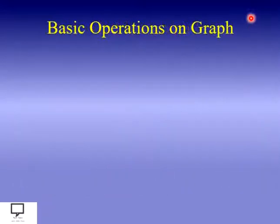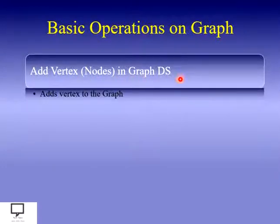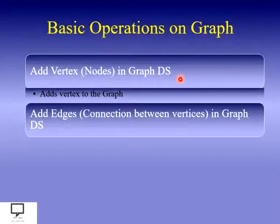Now, let's see which basic operations we can perform on a graph. The first basic operation is adding vertices or nodes in a graph data structure. They are helpful to add vertices in your graph. Next, after adding the vertices, you have to add the edges to form a graph.